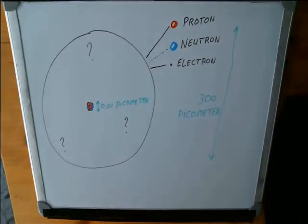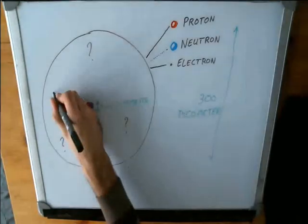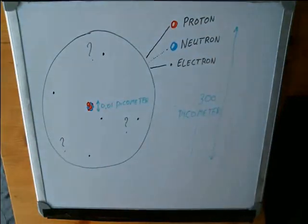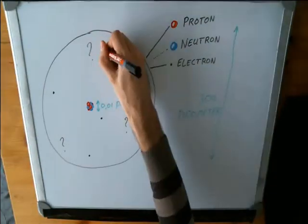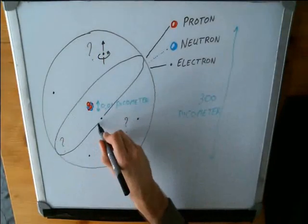So this leaves this big open space in an atom, and they realized that this open space was going to be the domain of the electron. But what they didn't know was exactly how the electrons are filling this space. If they are spinning around, or orbiting, or what?